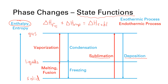Now, if on a quiz or a test you're asked to give the sign of one of these processes, just sketch the energy level diagram with solid at the bottom, liquid in the middle, and gas at the top, and you should be able to get the right answer every time.